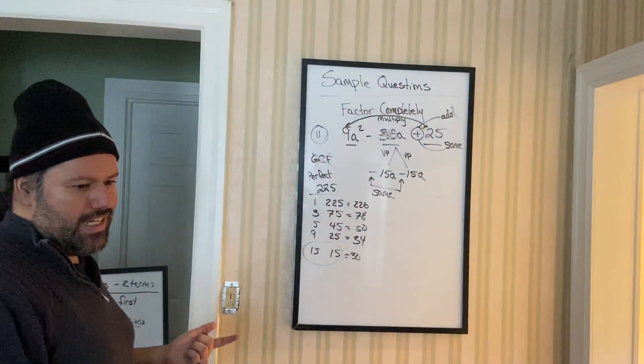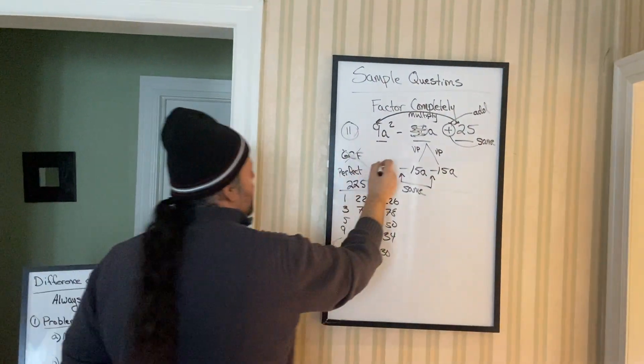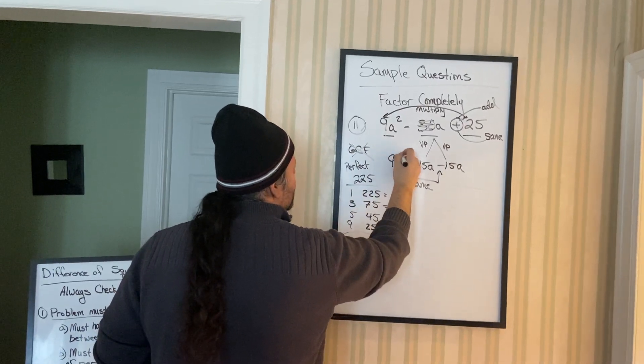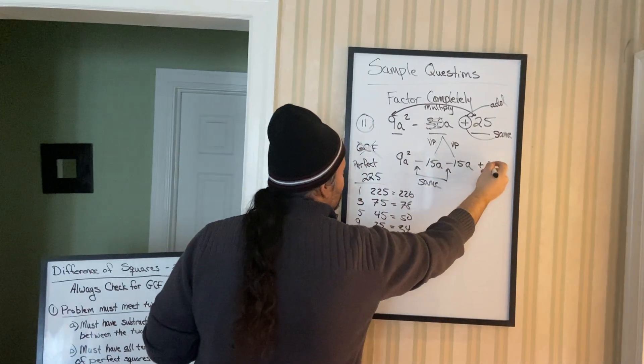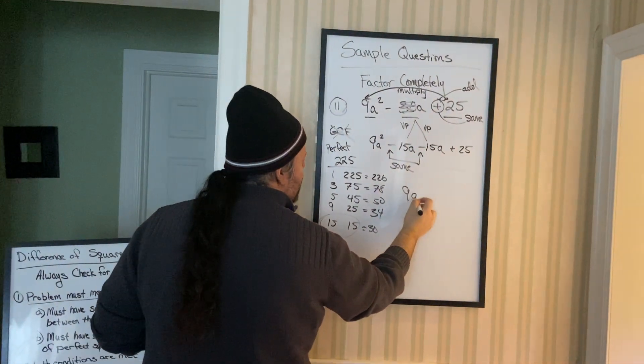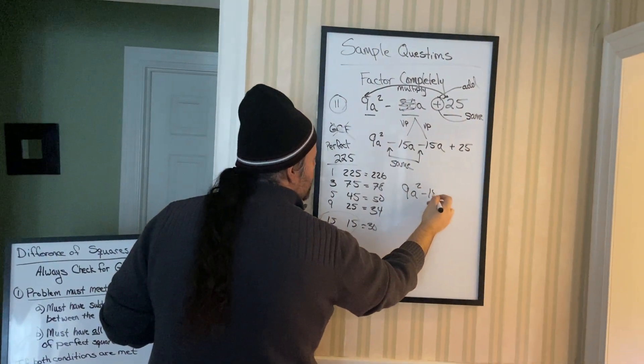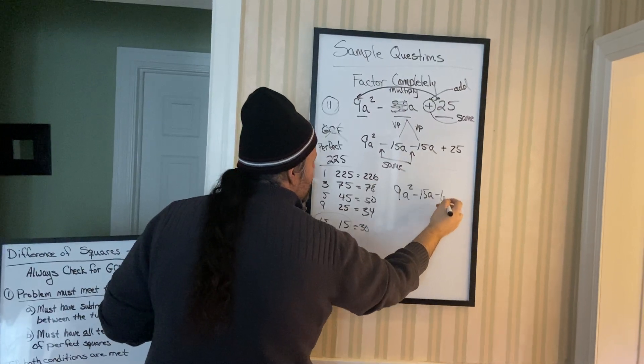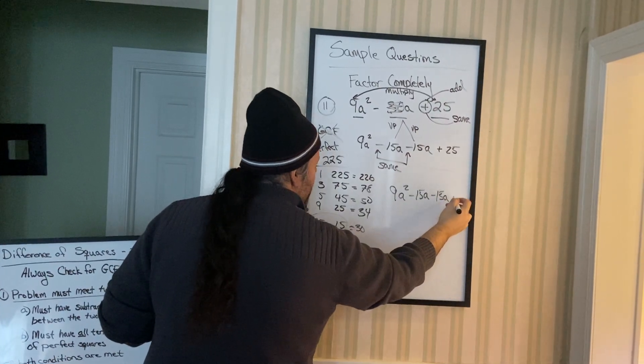And then step seven. Bring down the first term. Bring down the last term. And now that you have four terms, you are done with the arch or AC method. Because you have four terms, remember to do factoring, you do now 6.1 grouping.